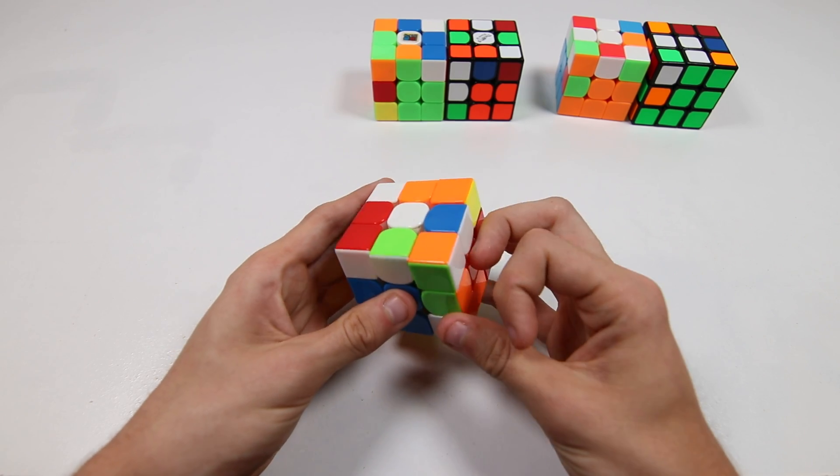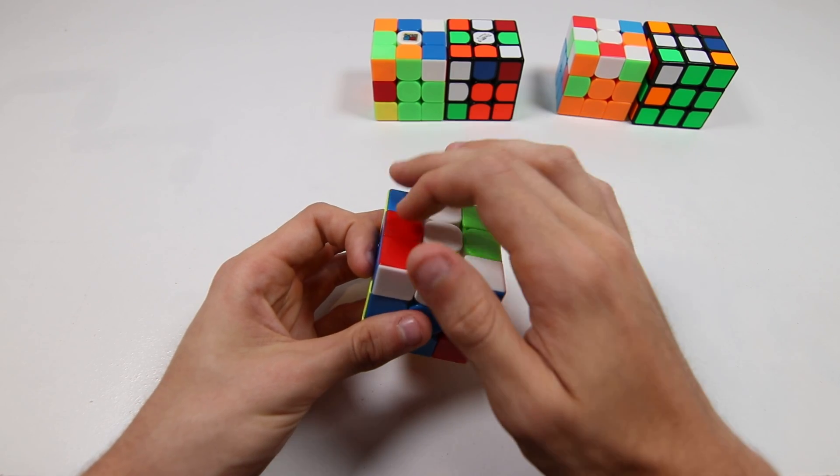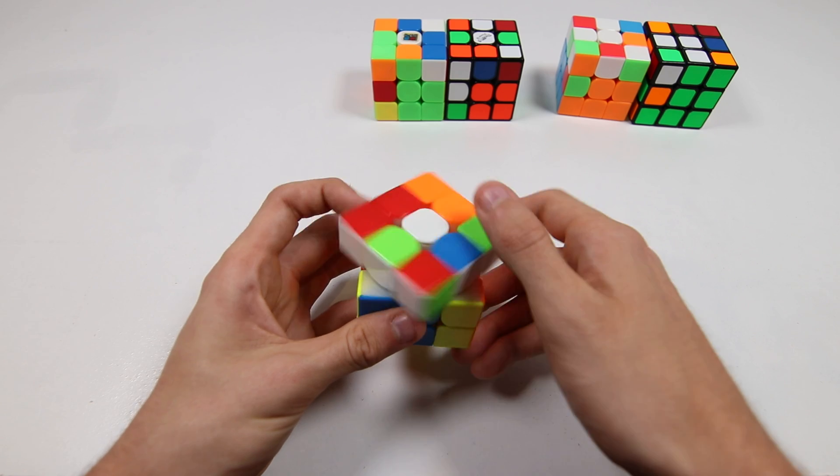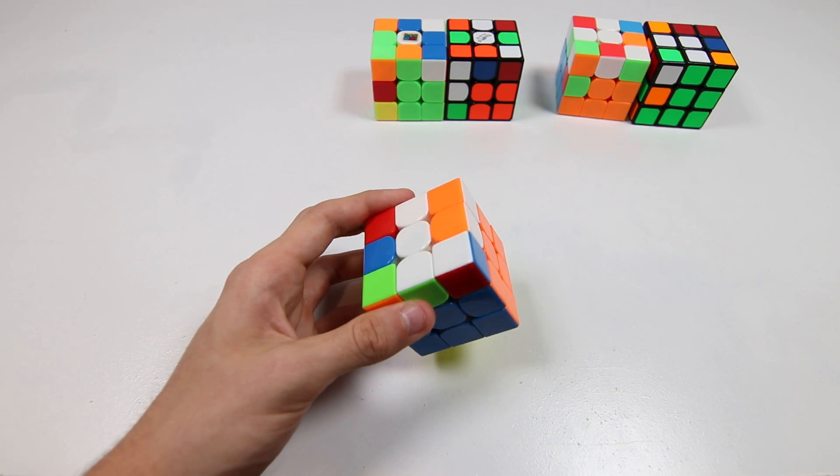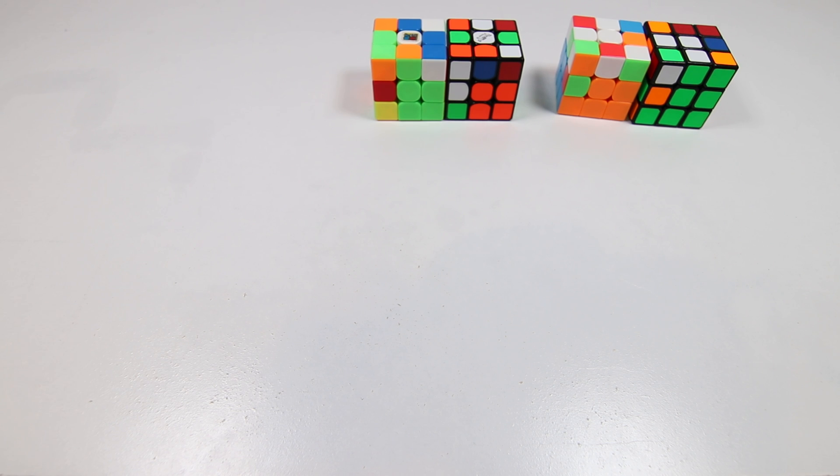But anyways, F, and then solve this pair, standard stuff, and then we do this pair here. Something like that. And that gives us a pretty good finish. That's it for part 2, stay tuned for part 3, which I'll film right now.